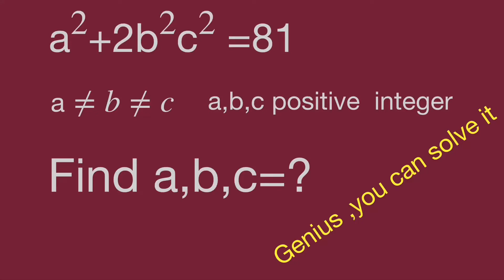Hello, you are watching Bala Hippo Math Genius Readdle. Here's a challenge with questions. We have a squared plus 2 multiplied b squared c squared equal to 81. a not equal to b, not equal to c, and abc are positive integers. Find the value of abc. Can you find the value of abc? Pause the video and give yourself a try. Keep watching the video to find the result.